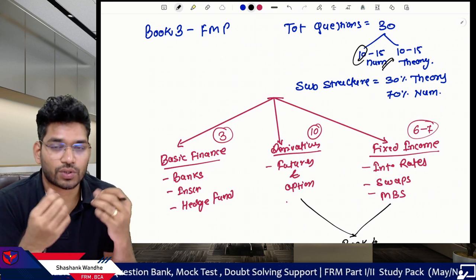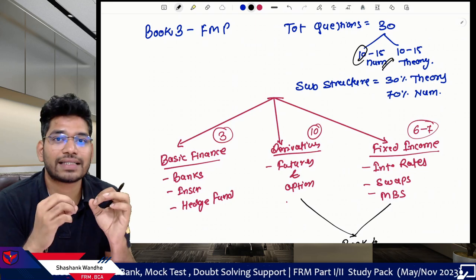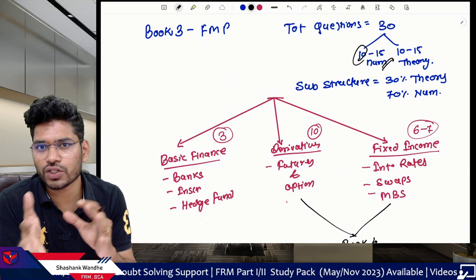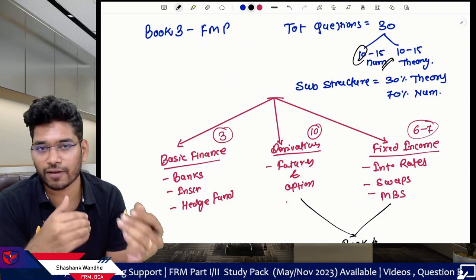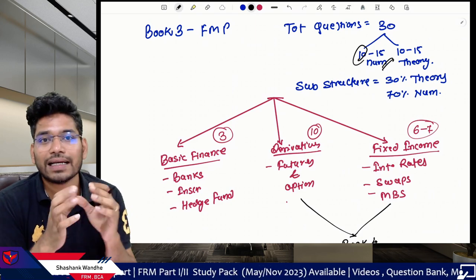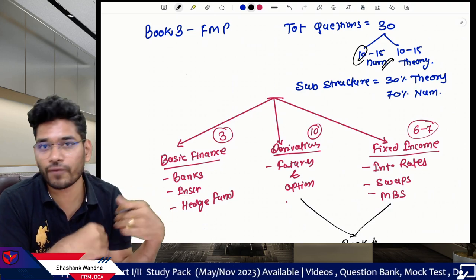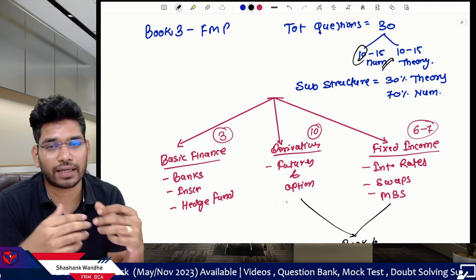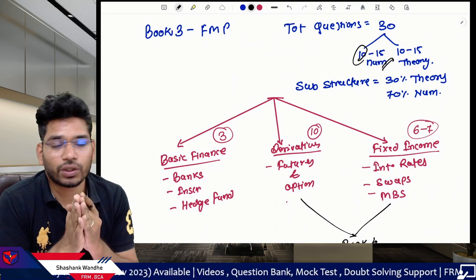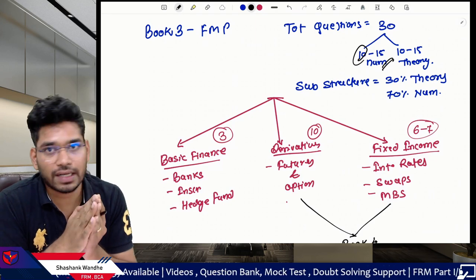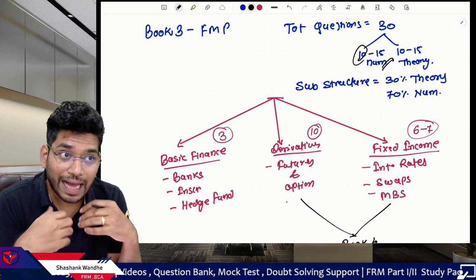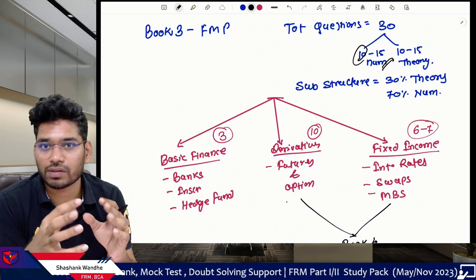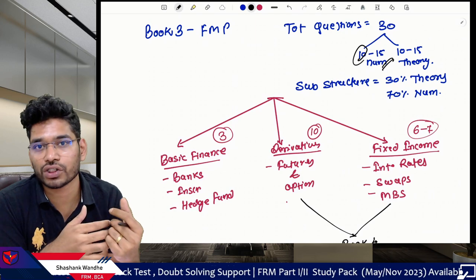Book 3 is Financial Markets and Products, and it is the easiest subject of all four subjects. In this subject we have core discussions relating to the basics of finance, basics of derivatives like options, futures and forwards, and also the basics of fixed income. You will get approximately 30 questions in the examination, and approximately 10 to 15 questions will be numerical in nature, with the remaining being theory.